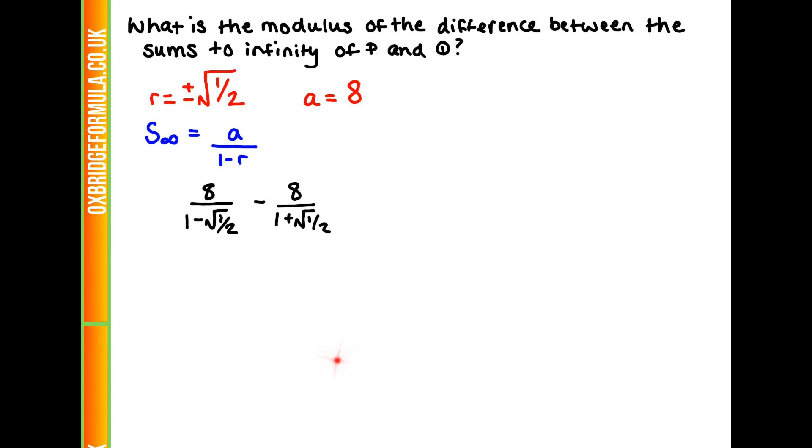We can simplify this by multiplying our opposites to get a common denominator. That's going to be 8 plus 8 root of a half, minus 8 plus 8 root of a half, all over 1 minus a half.